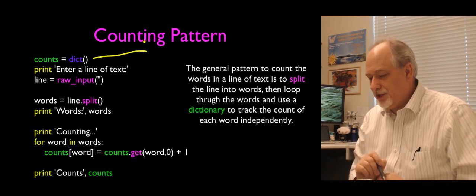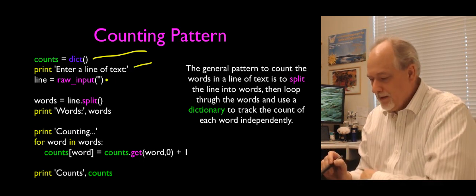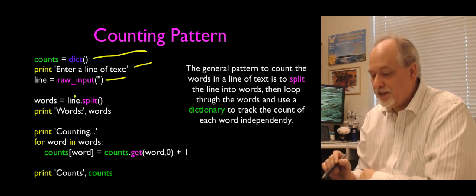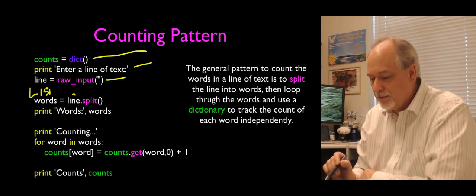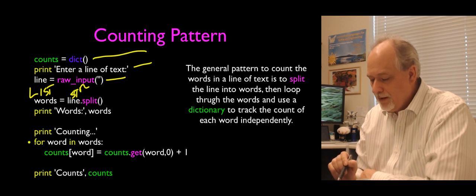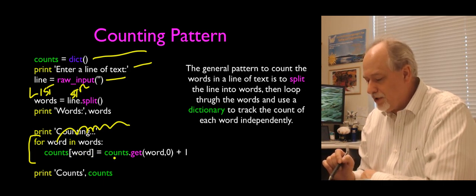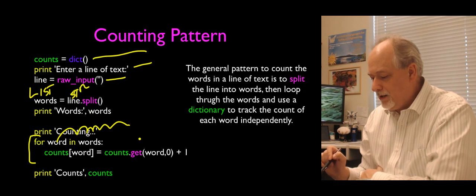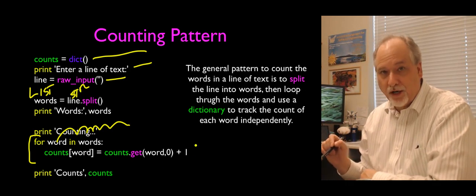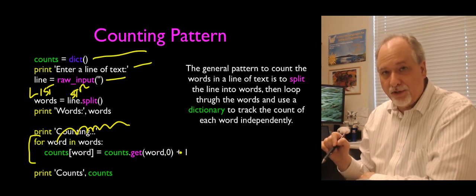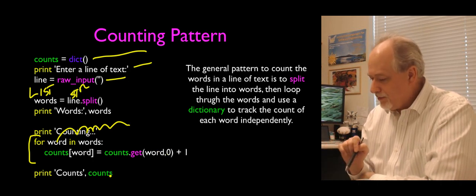Remember, split takes a string and produces a list. Words is a list, line is a string. Then we write a for loop that goes through each of the words and uses the idiom: count sub word equals counts dot get word comma zero plus one. This is going to either create the entries or add to those entries. Then we print the counts out.